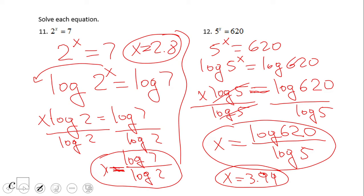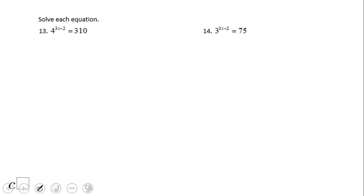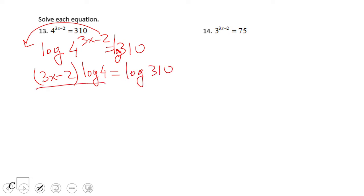What about this type of equation? Same idea. We want to log each side. So we have log of 4 to the power of 3x minus 2 equals log of 310. Now 3x minus 2, the exponent, goes up front. We have 3x minus 2 log of 4 equals log of 310.